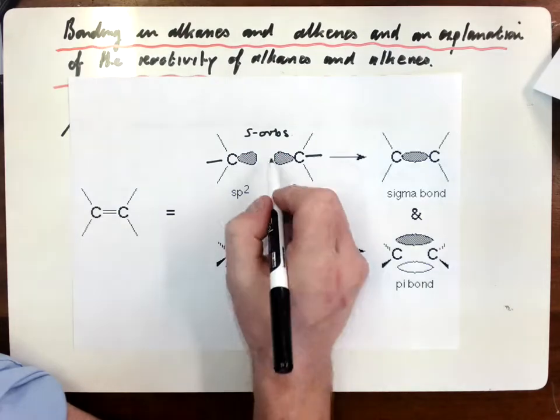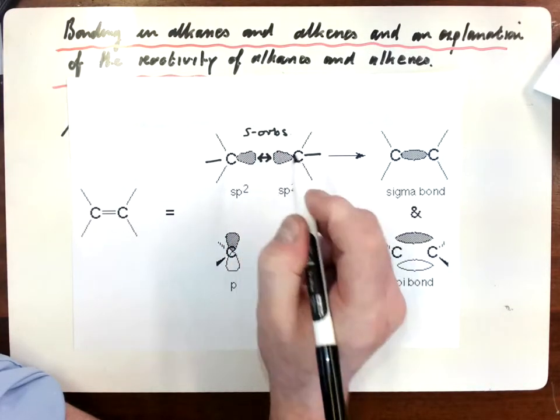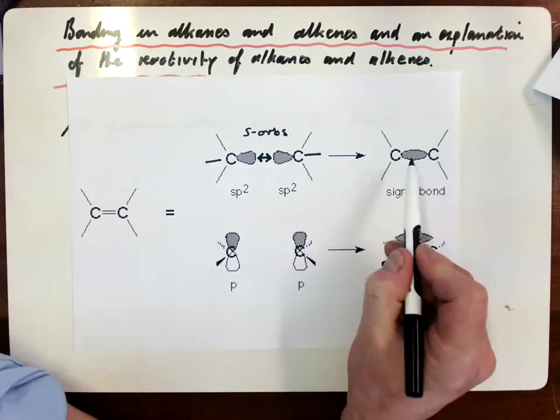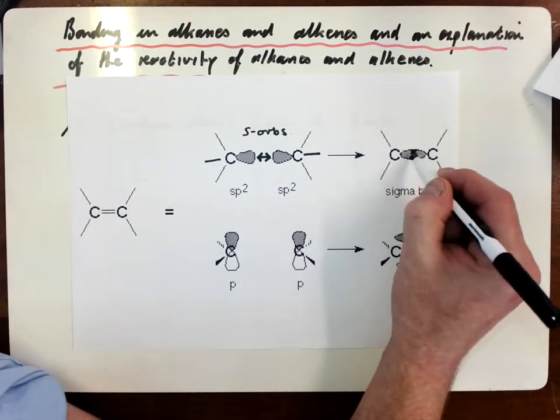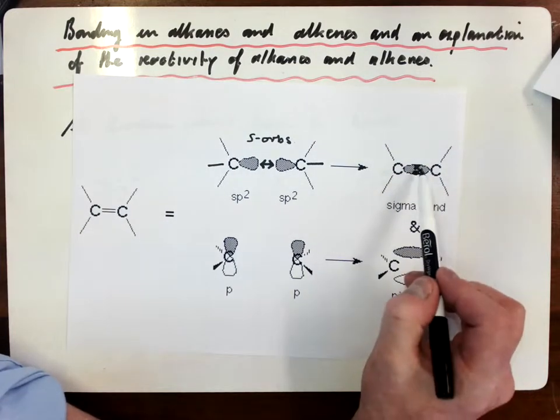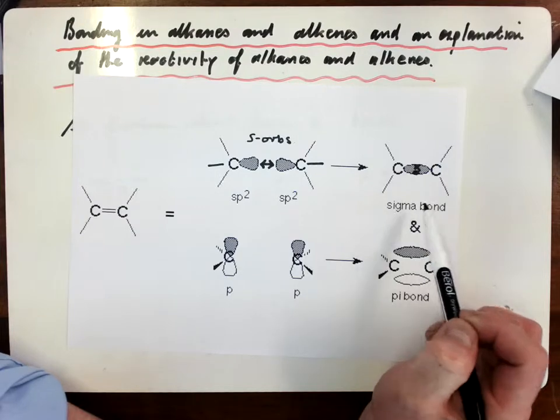And those two S orbitals, if the attraction is strong enough, they will approach each other. And if it's strong enough, they will eventually overlap. And you'll have your two S orbital electrons in this area here, and we now have a bond. And that bond is referred to as a sigma bond.